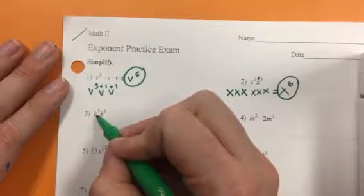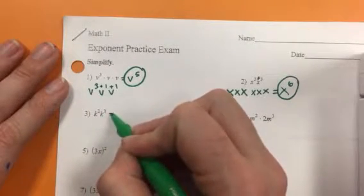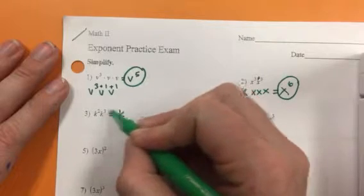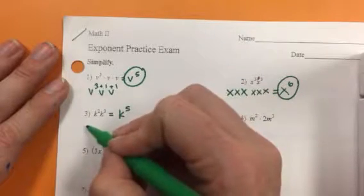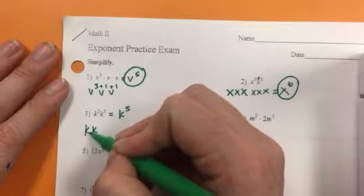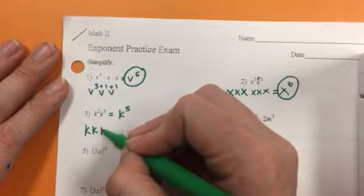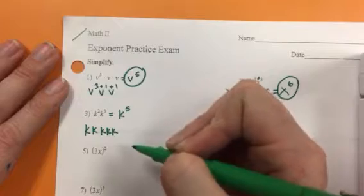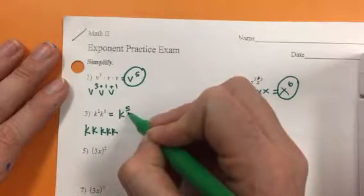On problem three, we have k squared and k cubed, which is a total of k to the fifth because k, k, there's k squared, k cubed, which means there are three of them. So we have a total of five.